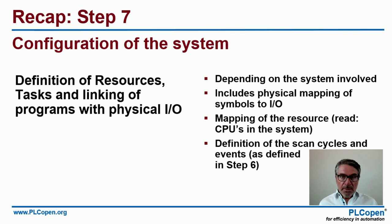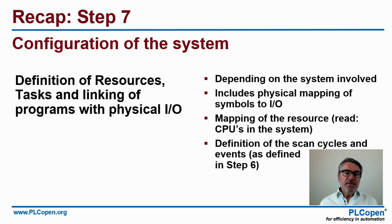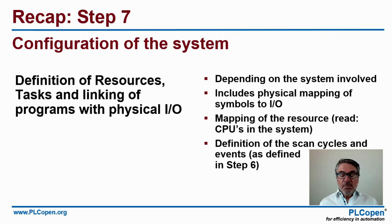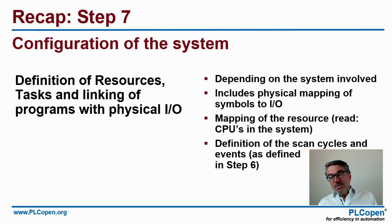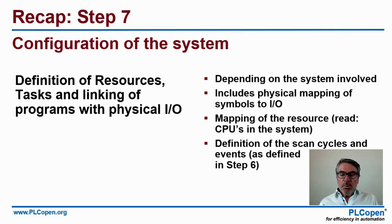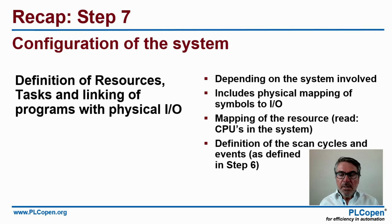Recapping step seven: we define resources and tasks, and link programs to physical I/O. This is where we map the naming and data types to a physical location — very much depending on the system involved, whether there is a communication bus or analog inputs and outputs, and how many scan cycles we have.